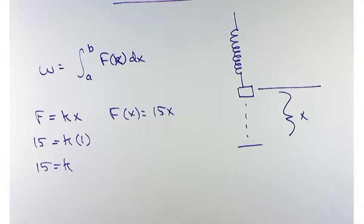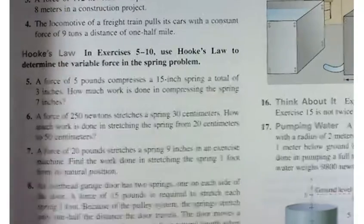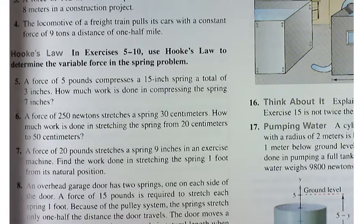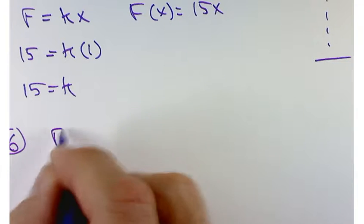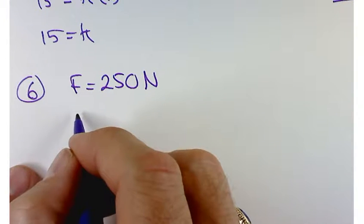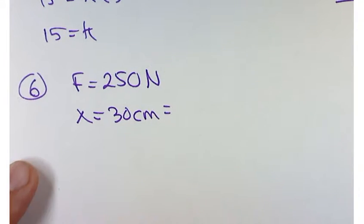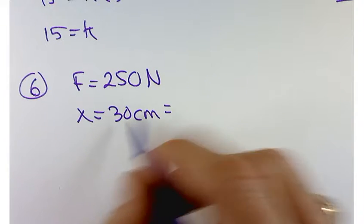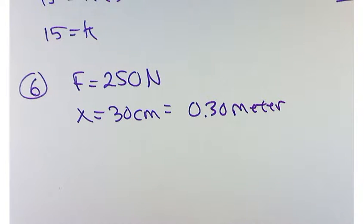Let's take a look at problem number 6. A force of 250 newtons stretches a spring 30 centimeters. First of all, our force is 250 newtons. And, annoyingly, they tell us the distance x is 30 centimeters. I think to keep things consistent and clean, we should convert that from centimeters to meters — 0.30 meters. Three-tenths of a meter is 30 centimeters.